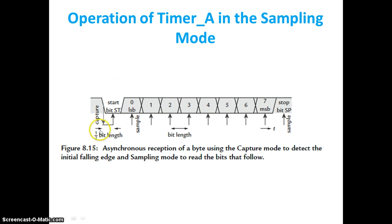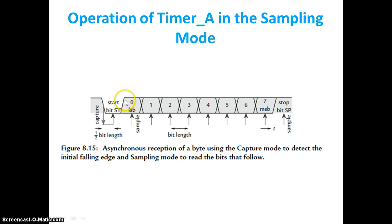To summarize the operational flow: initially the system is in capture mode. Whenever there is a falling edge transition, it concludes that start bit transmission has begun. With half the bit length delay, we check whether the bit value is exactly zero — to do this, Timer A is shifted into compare mode. If equal to zero, we proceed; otherwise, in the interrupt service routine, the system is put back into capture mode. This is why it is also called sampling mode — we sample at regular intervals.